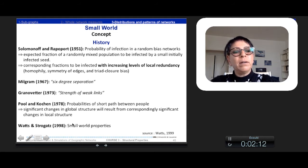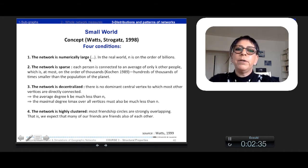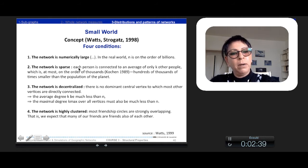So this is on these properties that Watson and Strogatz developed later their model of small world properties. So the concept they developed have four conditions. The first one is that the network must be quite large numerically because in real world we have an order of billion people. Also the network is sparse. Each person is connected to k people in average and in general the order is a thousand but it is hundred or thousand times smaller than the whole population of the planet. So they are not totally connected.